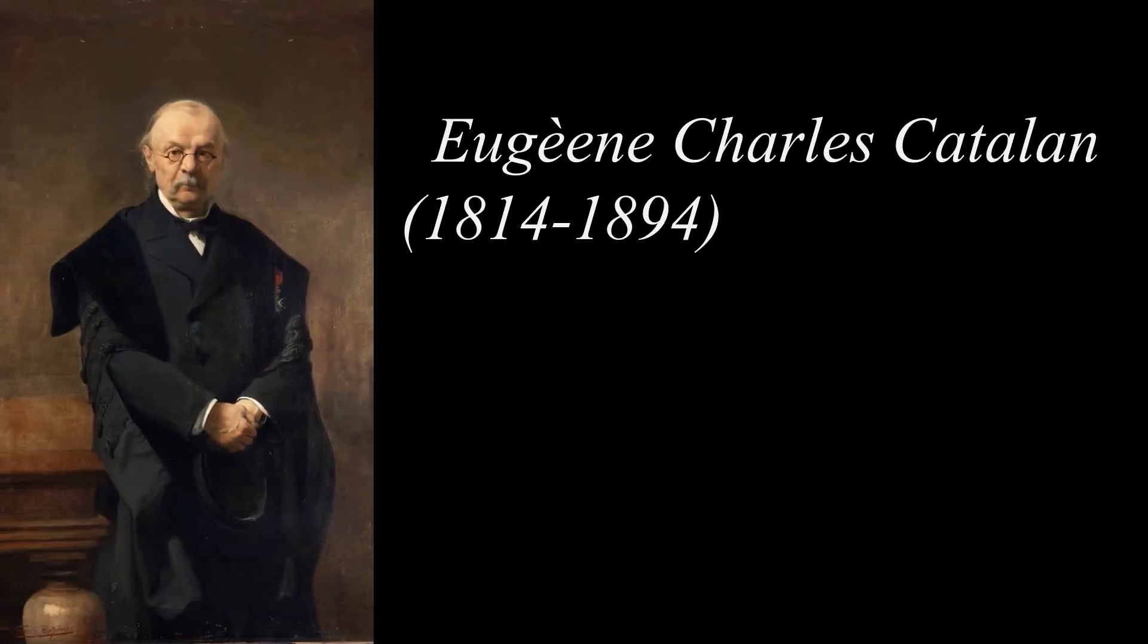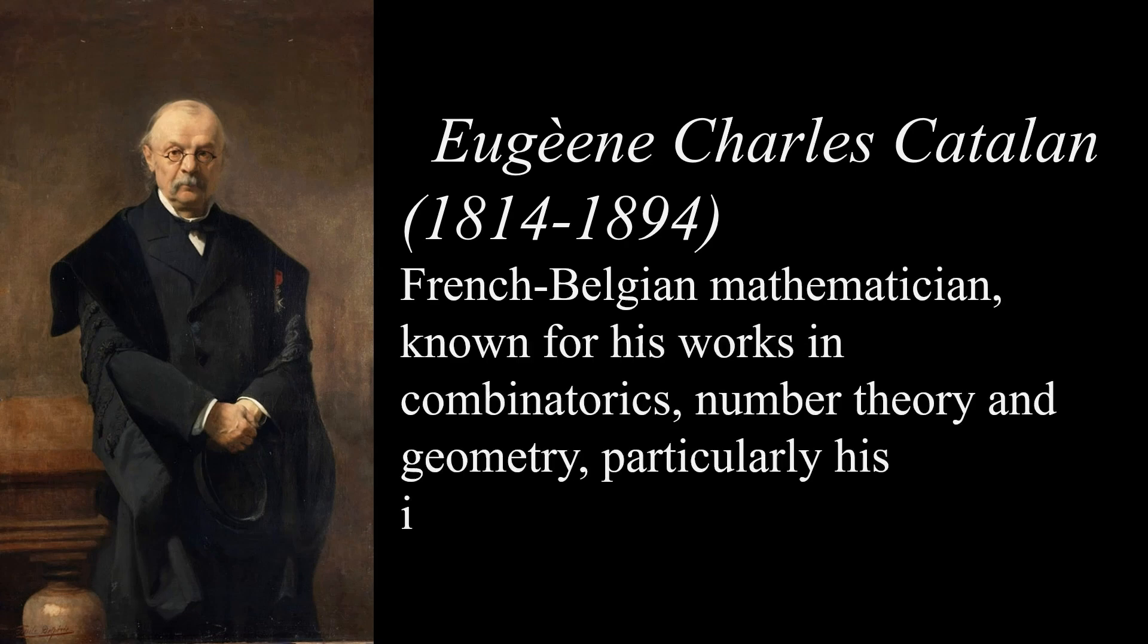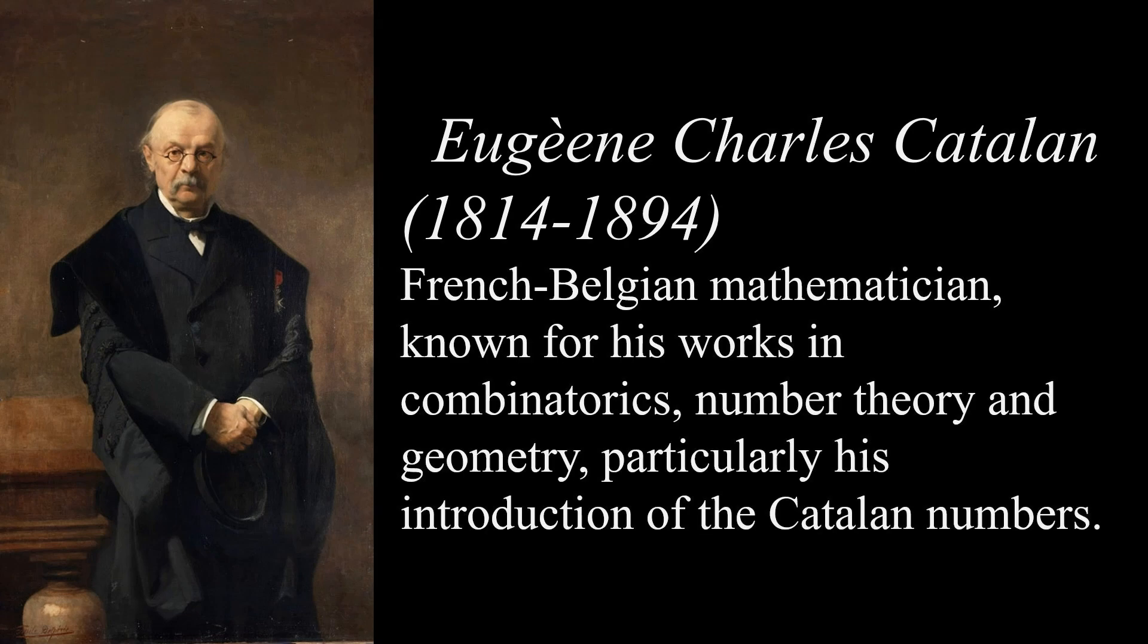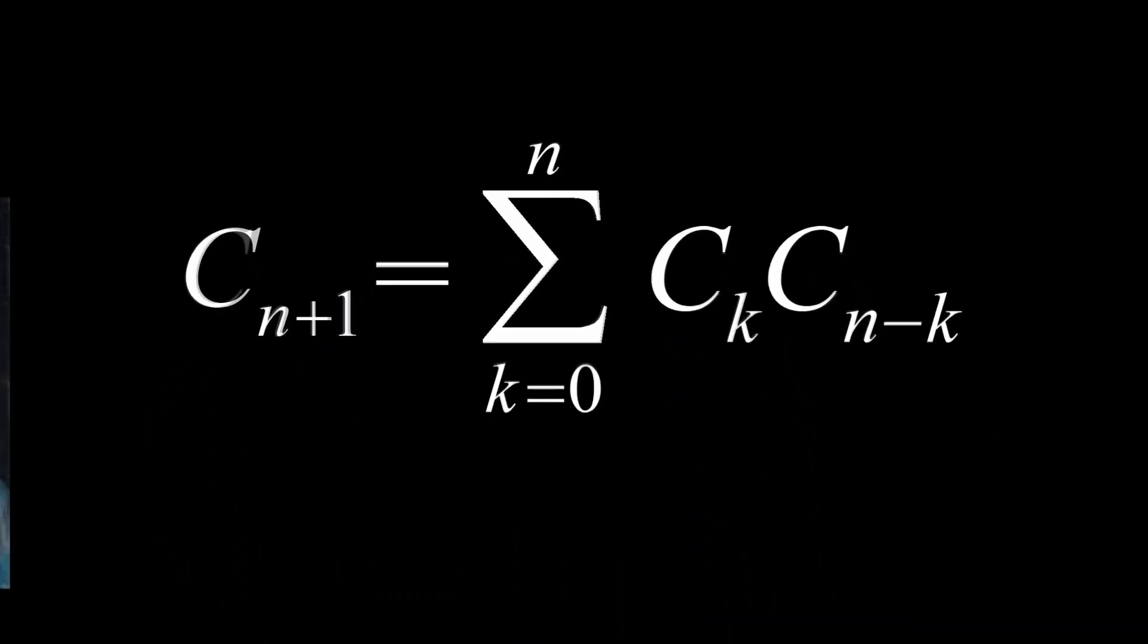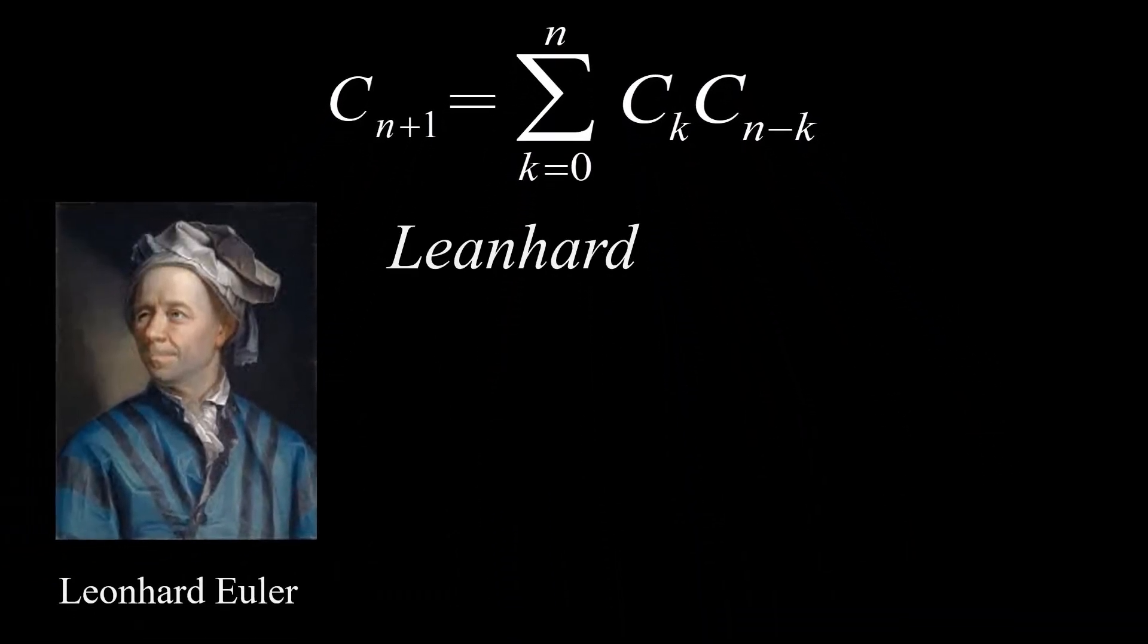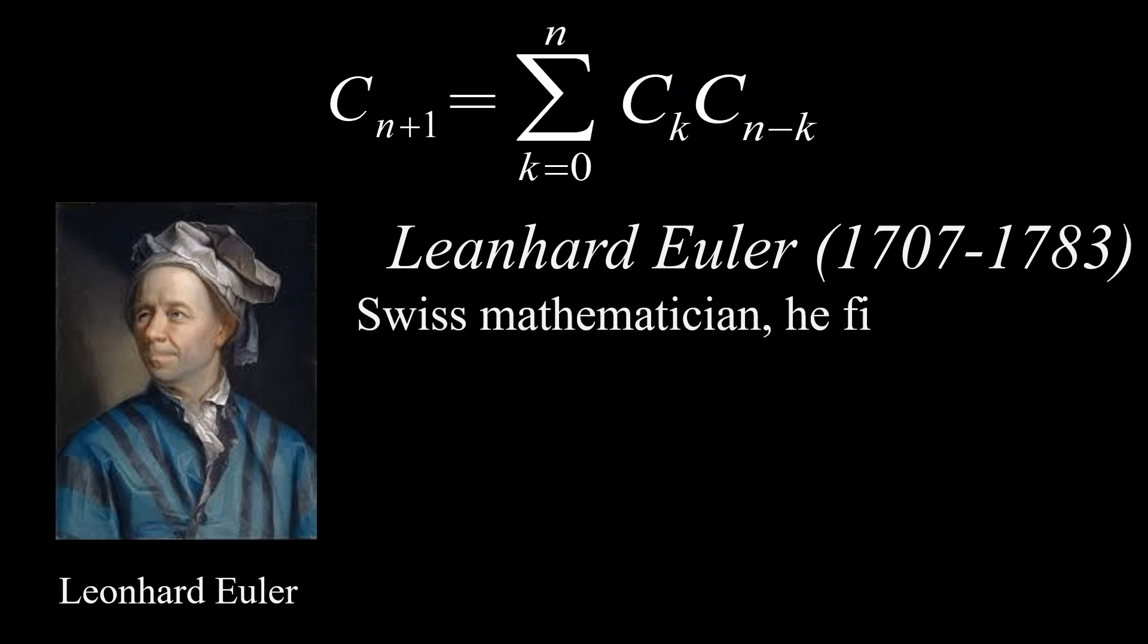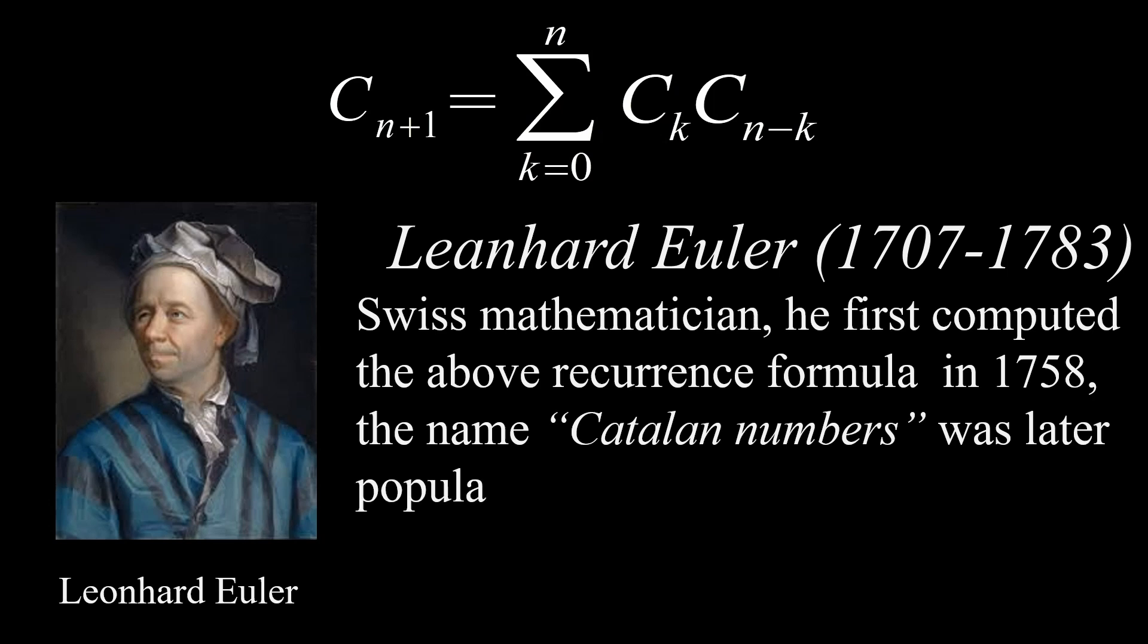The Catalan numbers are named after the Belgian mathematician Eugene Charles Catalan, who first discovered the explicit formula for them in 1838 in the context of counting well-formed sequences of parentheses. The recurrence formula, however, was discovered earlier by the Swiss mathematician Leonhard Euler in 1751 in the context of the number of triangulations of an n plus 2 gon, though it was not specifically associated with the sequence we now call the Catalan numbers.